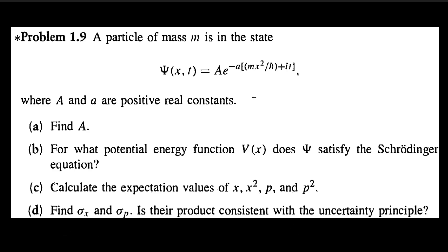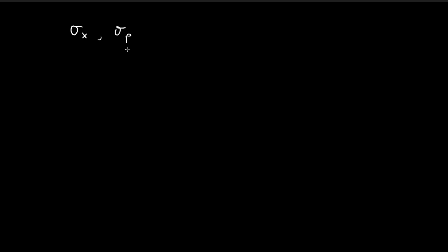Now in part D, we need to check the uncertainty principle. That means we need to find the standard deviation of x and the standard deviation of momentum. So let's start off with finding the variance of x, which is just the standard deviation squared. By definition, this is equal to the expected value of x squared minus the expected value of x, and then squared.